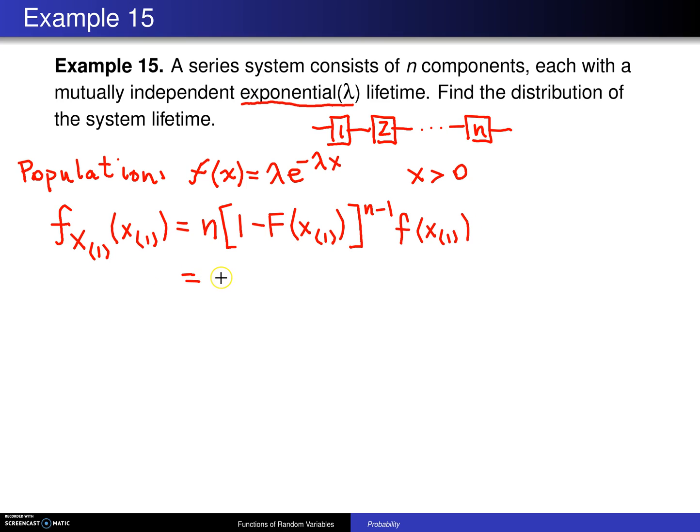At this point, it's simply plugging in all the pieces. If you look up the cumulative distribution function of the exponential distribution from chapter 5, this term turns out to be simply e to the minus lambda x sub 1, raised to the n minus 1 power, and the density function for the exponential population is just lambda e to the minus lambda times x sub 1.